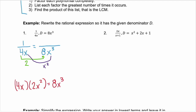That's how we got our new denominator. So to get our new numerator, we're going to take 1 — the existing numerator — and multiply it by 2x squared. That gives us an equivalent expression of 2x squared over 8x cubed.